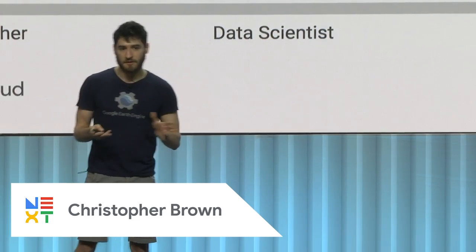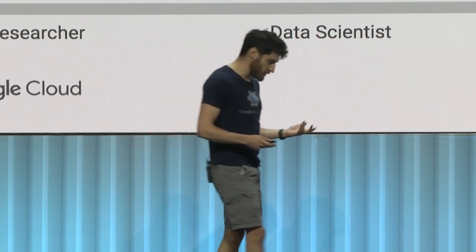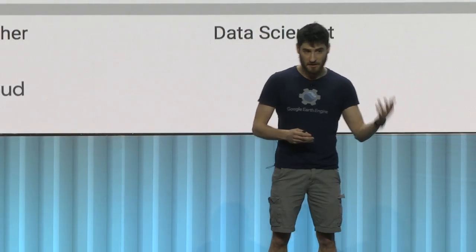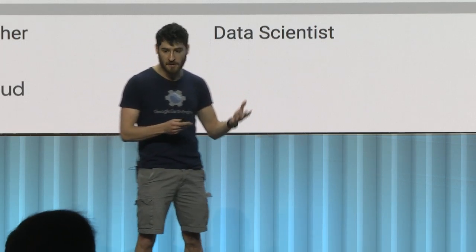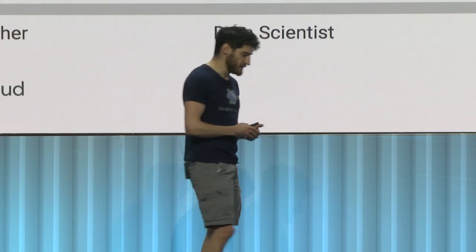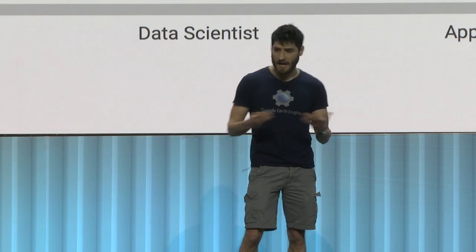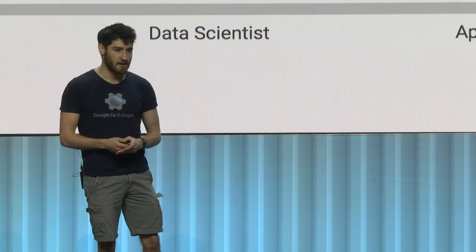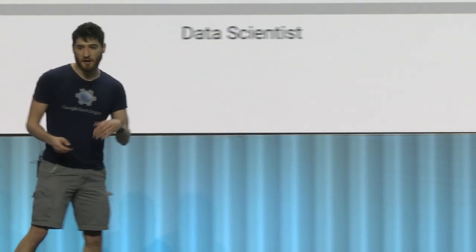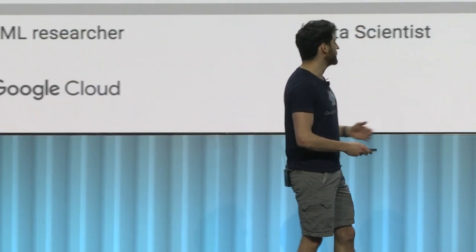We can train our model in Colab, then start to scale our predictions using things like ML Engine and Kubernetes. If you're an app developer and don't need to create your own model, you have things like speech, translate, and other APIs built in. But what we're going to talk about is how we used TensorFlow, Colab, and AI Platform to make this land cover map happen.